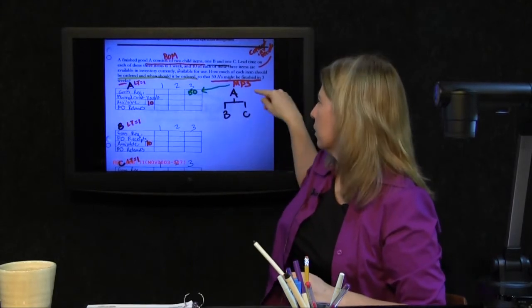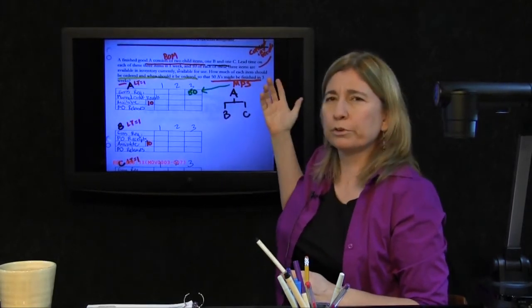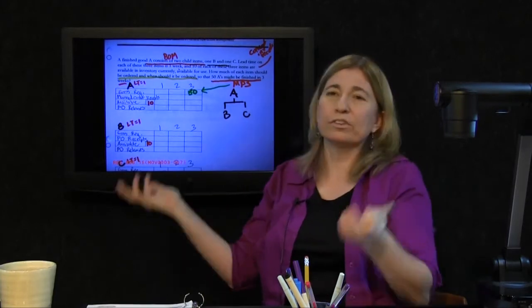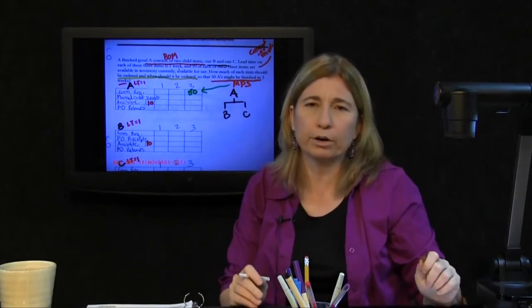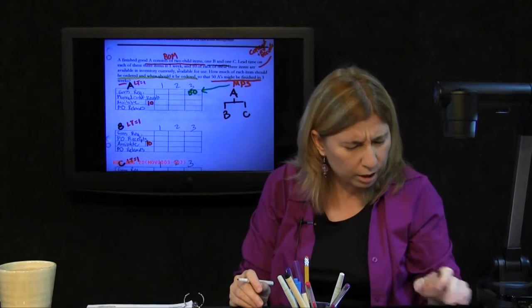Level zero items. Right. Level zero's at the top. Level zero, well there's only one thing at the top. That's A. Next step. Fill out the record for A.